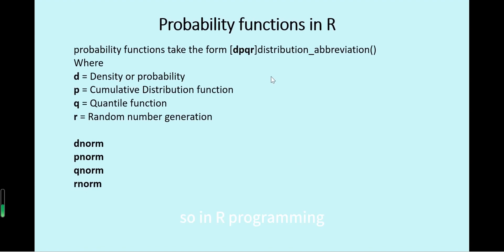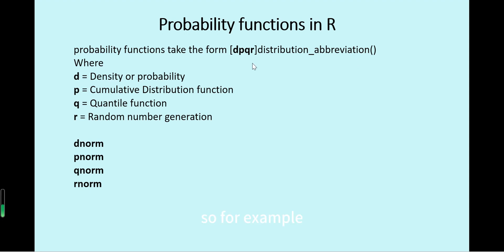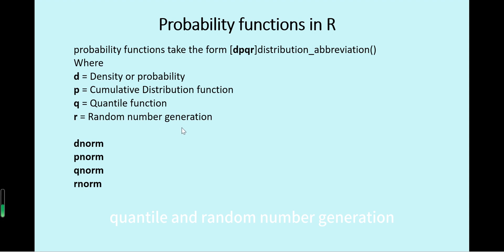In R programming, to calculate the probability for a distribution, functions usually take the form dpqr followed by the distribution's abbreviation. For the normal distribution, there are four functions: dnorm, pnorm, qnorm, and rnorm, where d, p, q, and r represent density, cumulative probability, quantile, and random number generation, respectively.